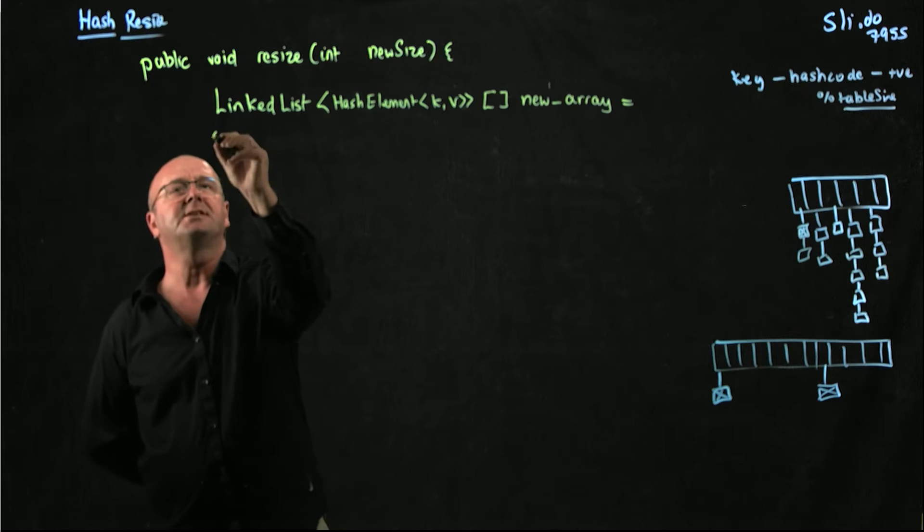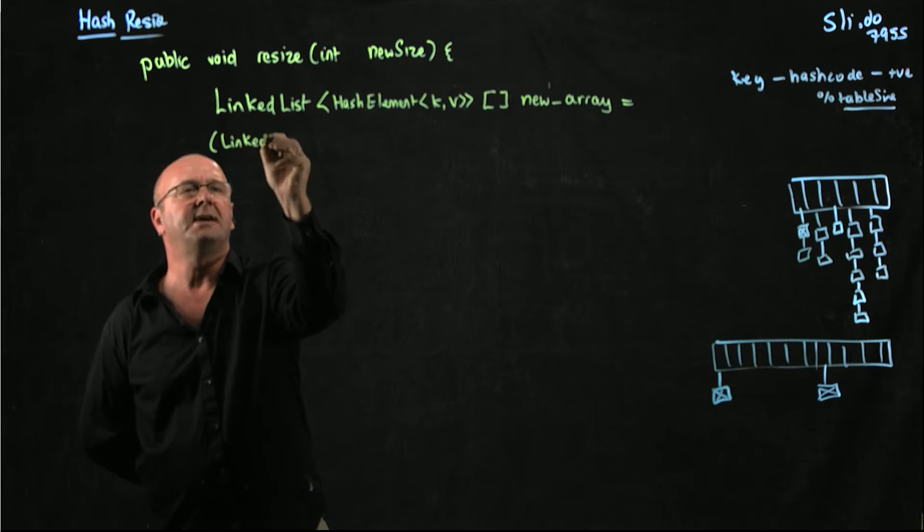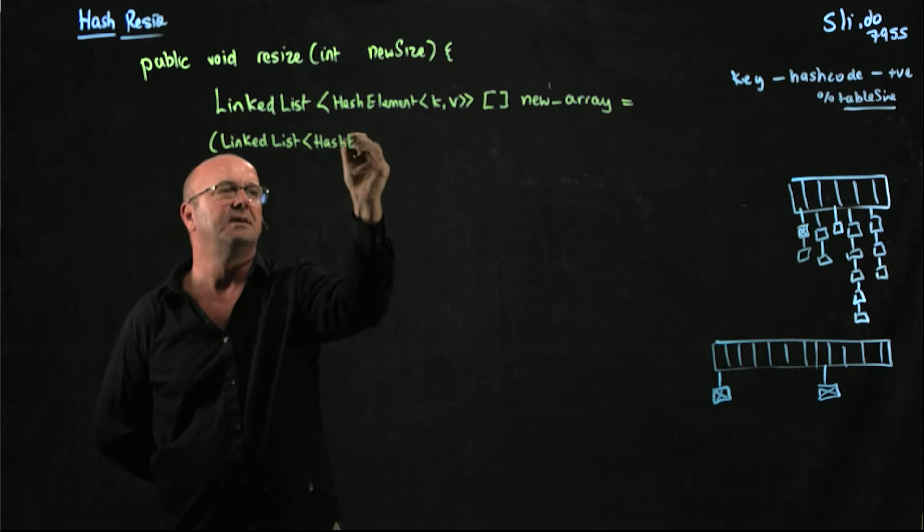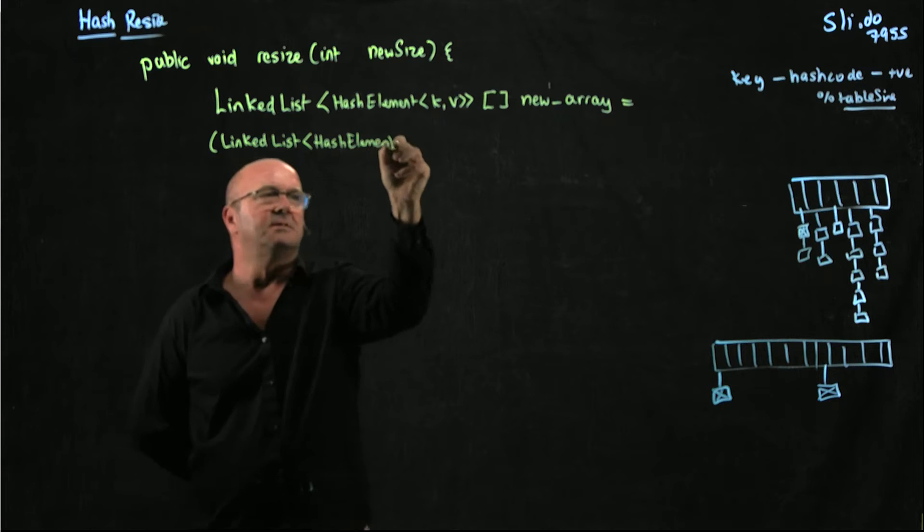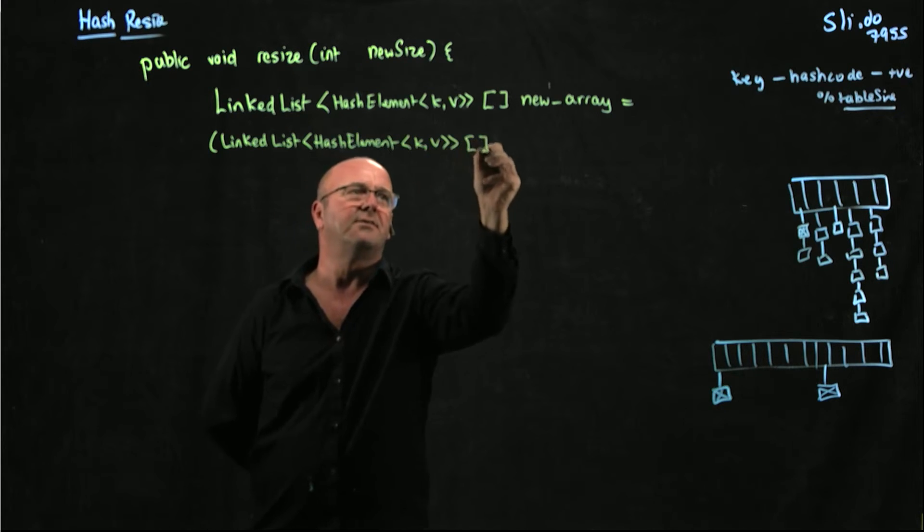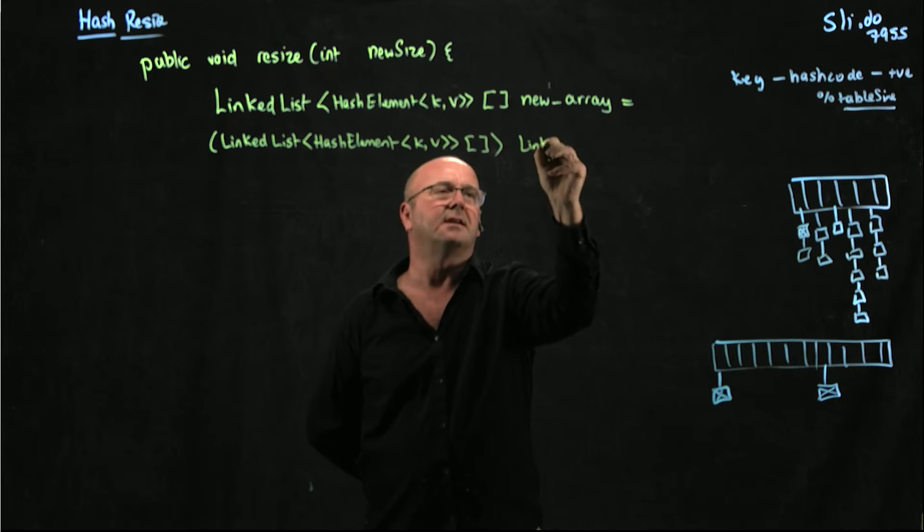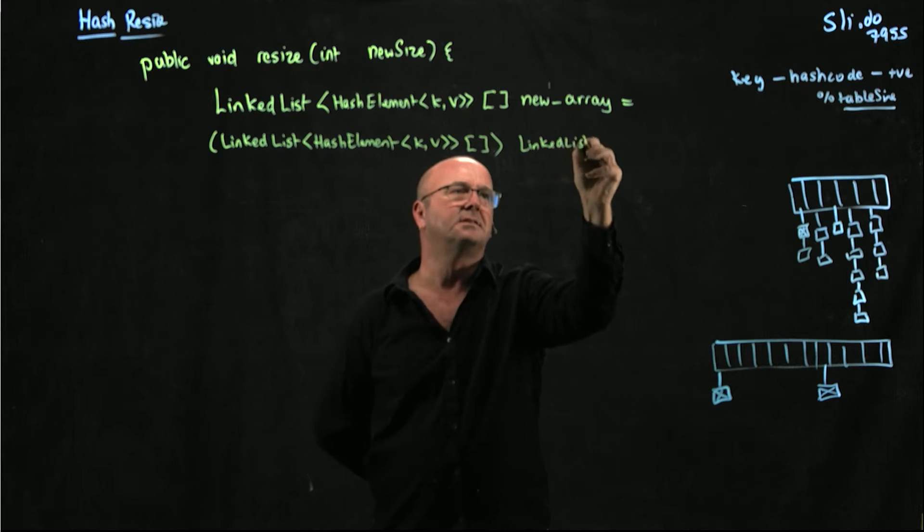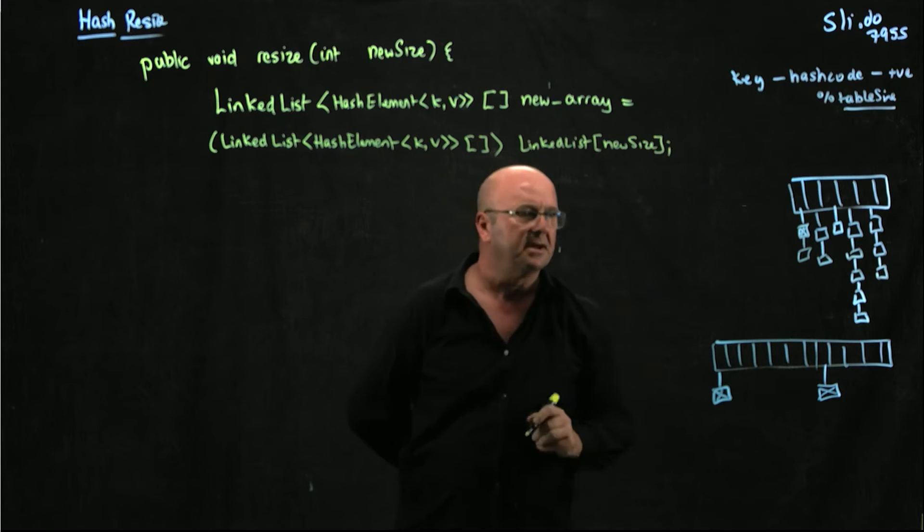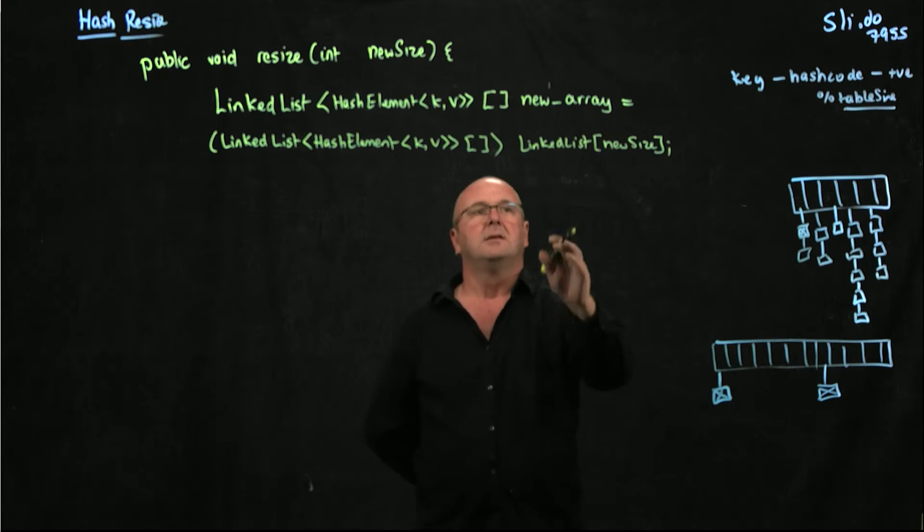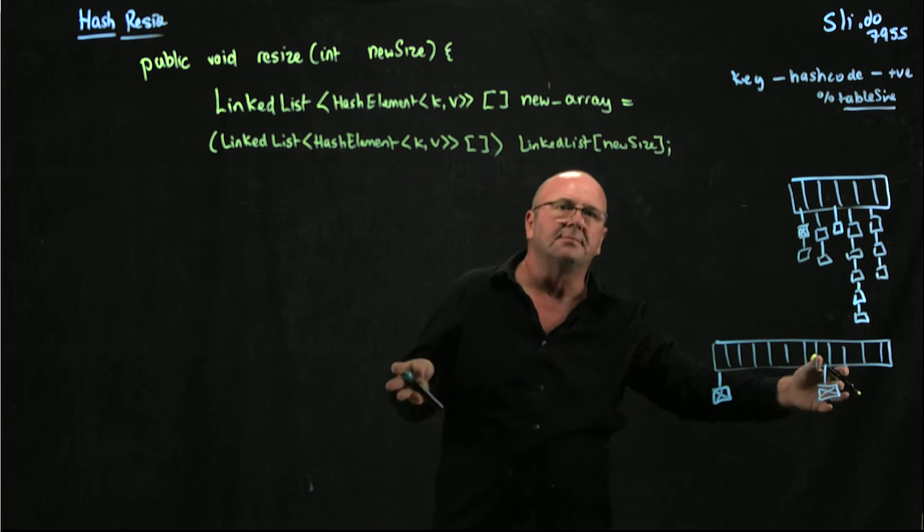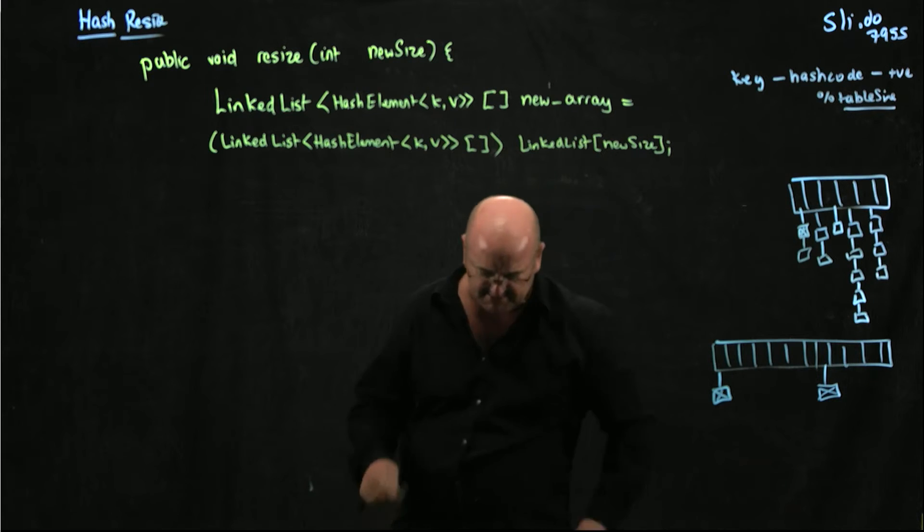Here I'm just going to define it straight away because I'm going to use it as soon as I've defined it. My definition is exactly the same as before, where I have to make an array and then cast it to be of the right kind, of the generic kind. So here's my cast to hash element KV array, and I'm going to make it a linked list array new size.